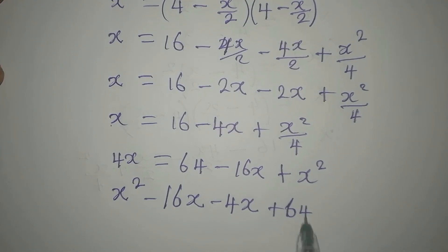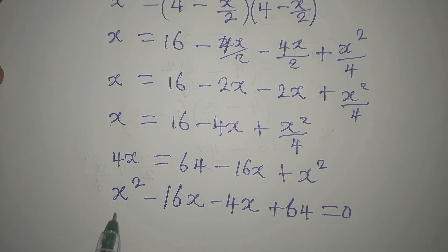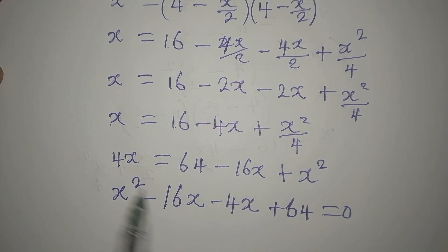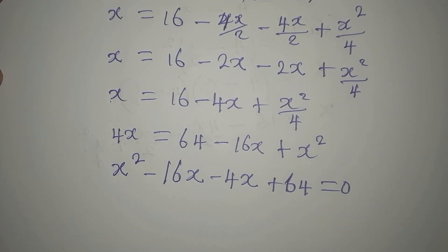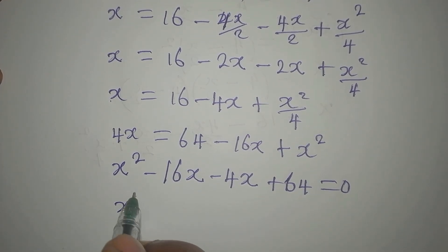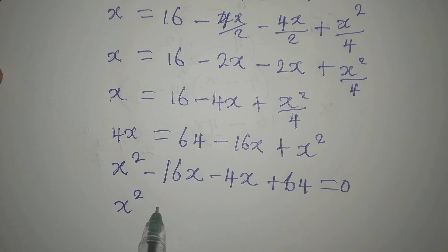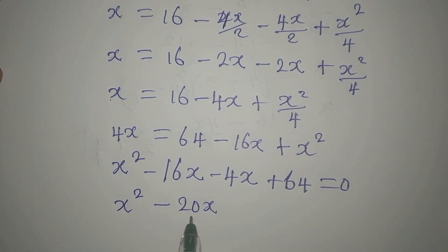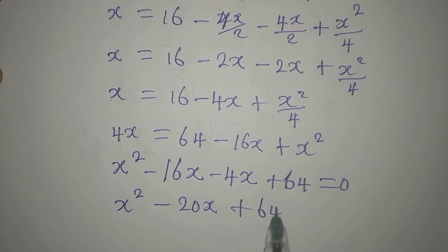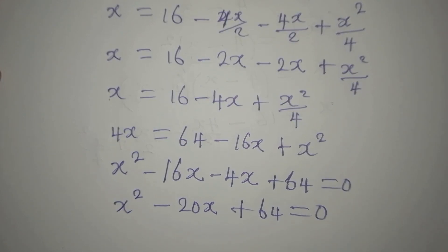Combining like terms: x² - 16x - 4x + 64 = 0, which gives us x² - 20x + 64 = 0. This is now a quadratic equation.